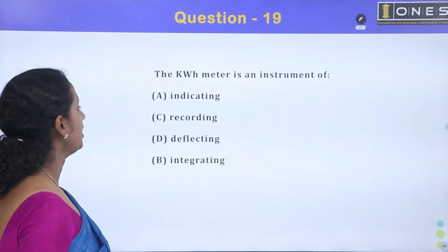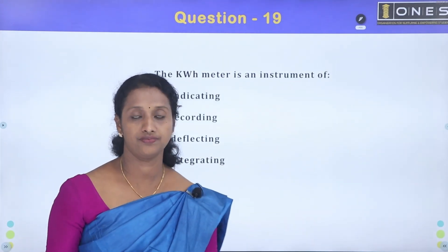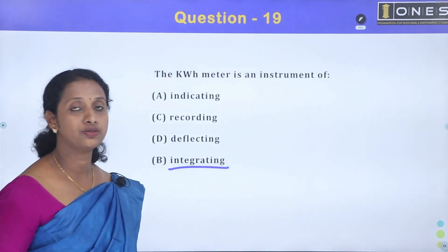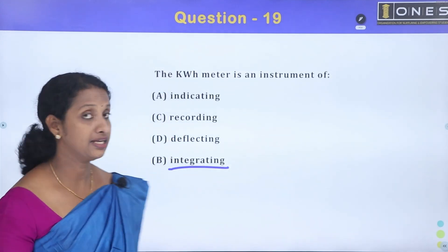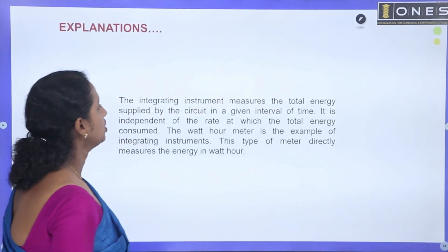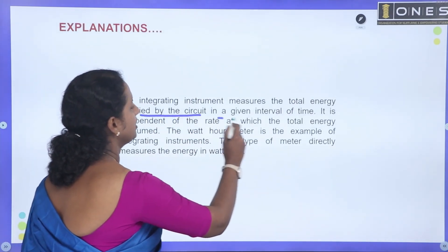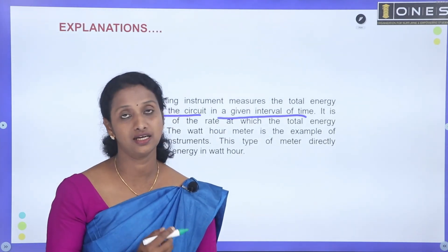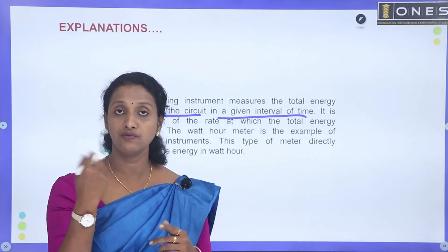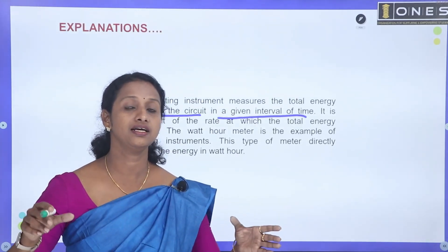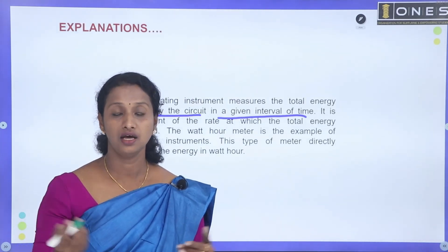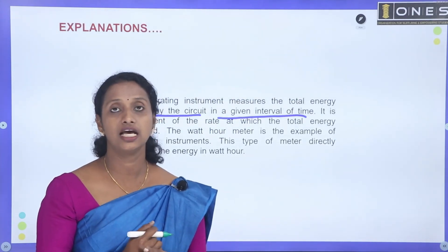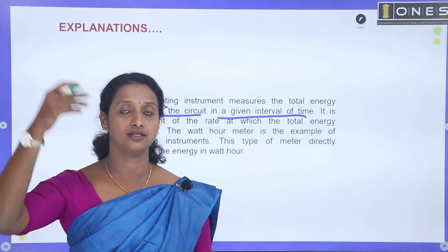Next: the kWh meter is which type of instrument — indicating, recording, deflecting, or integrating? The kWh meter is an integrating instrument. Energy consumption is measured by integration — the total energy supplied by the circuit over a given interval of time. Each period supplies energy, making it an integrating unit. It sums up the total revolutions over time.